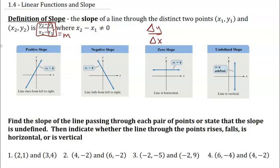A positive slope means as we go from left to right, the function is increasing — slope m is greater than zero. For a negative slope, we are falling from left to right, so the function is decreasing. If the slope is zero, the rate of change of y with respect to x is zero, meaning we have a constant function. And if two points share the same x-coordinate, we have an undefined slope, which is what we get for a vertical line.